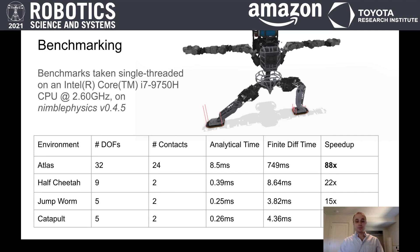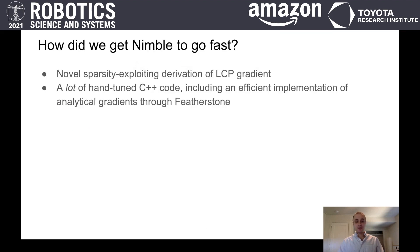So how do we achieve these kinds of performance gains? We get a good constant factor from using reasonably efficient C++, but the biggest algorithmic improvements are our novel derivation for getting gradients through the contact LCP in a way that exploits sparsity. I don't have time in the spotlight talk to go into all the math, but we can briefly describe the intuition here and hopefully whet your appetite to read more about it.